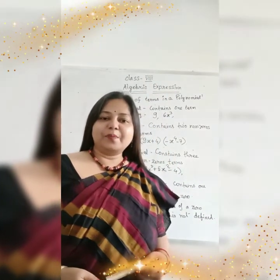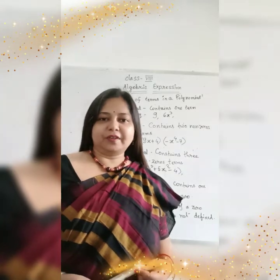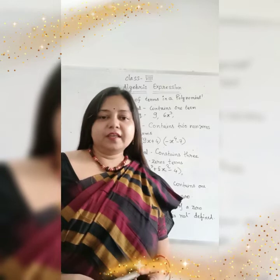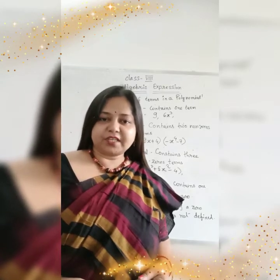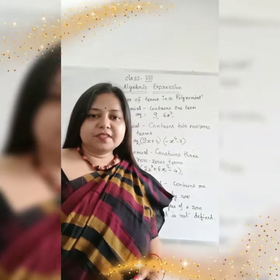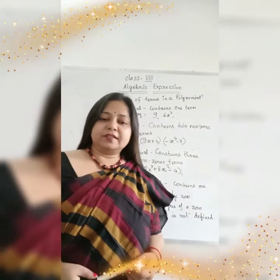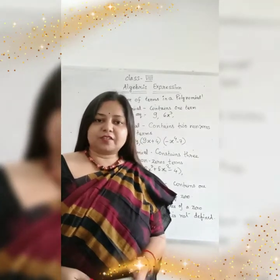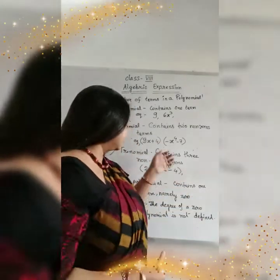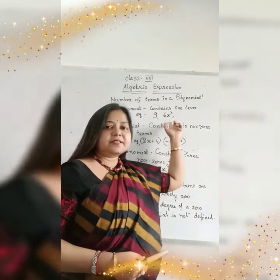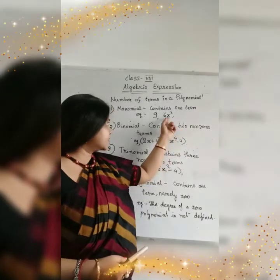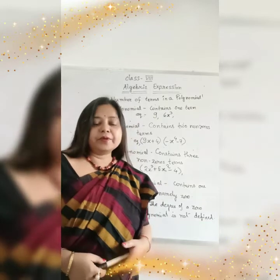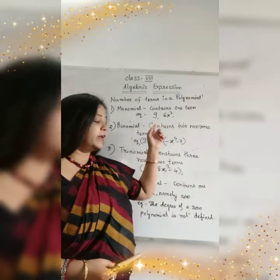So our next topic is number of terms in the polynomial. Let's see how many terms there are in the Algebraic Expression or polynomial. When there is a single term in the Algebraic Expression, it is called monomial. Like 9, 6, x square, x cube — these are the examples of monomial.